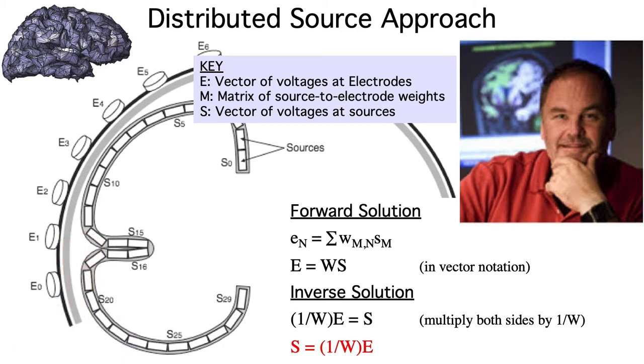But Anders also explained the problem with this approach. The matrix of weights can't actually be inverted. This is related to the fact that the inverse problem has an infinite number of solutions.